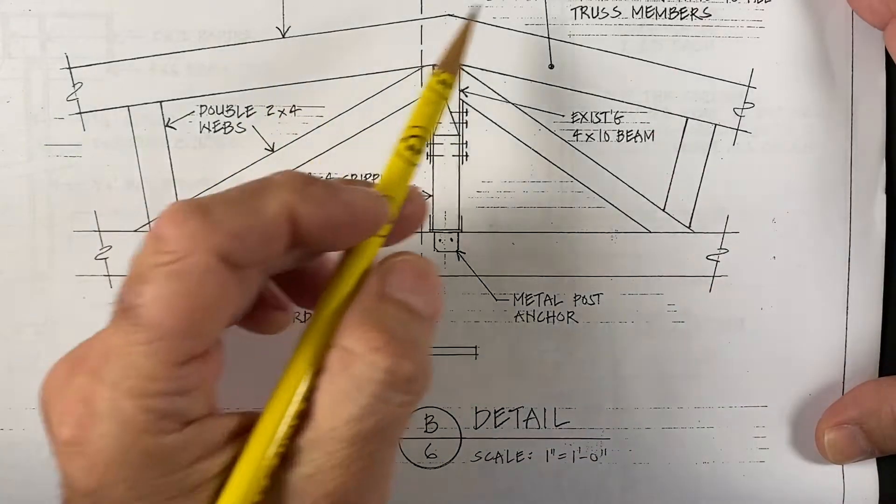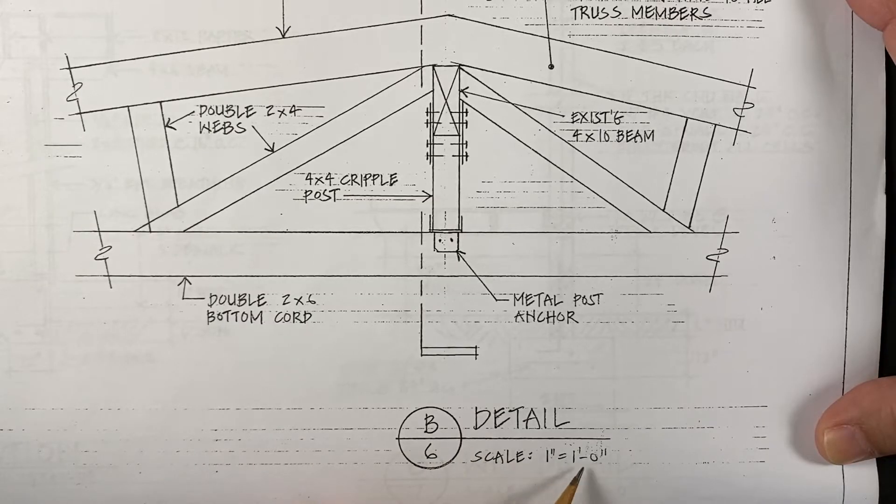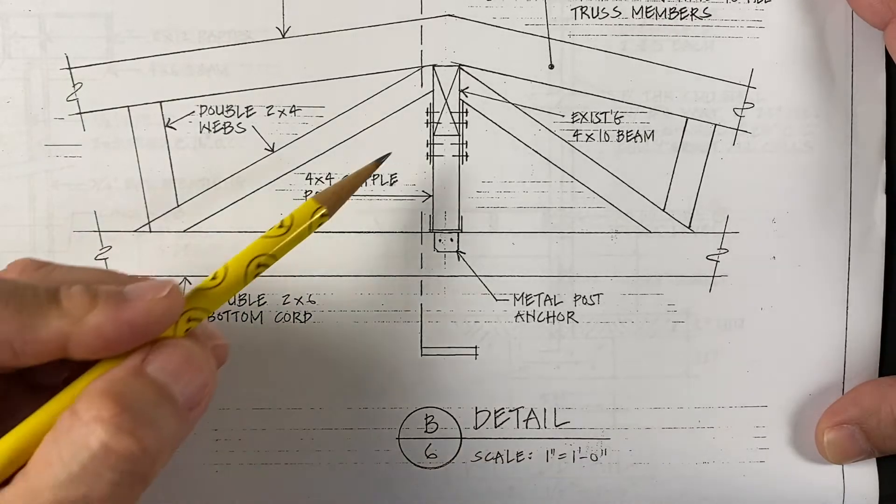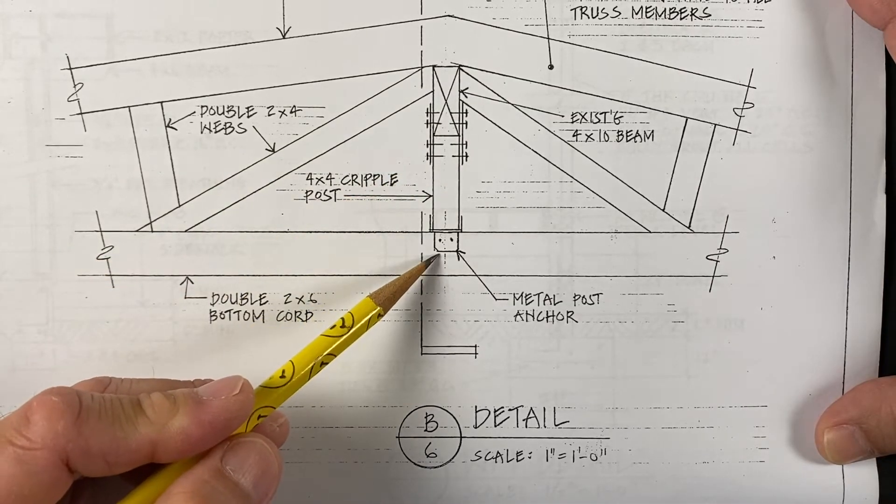And here's a roof framing detail with a little larger scale of one inch equals a foot. Where details like these lag bolts and metal anchor can be shown in red.